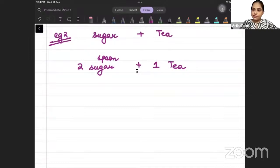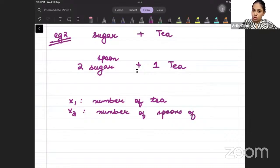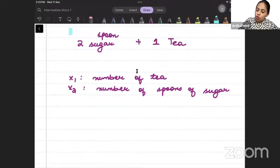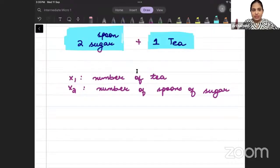Now how will we write the utility function? Let us say that x1 represents the number of tea. And x2 represents the number of spoons of sugar. Now we have to see that I am using 2 spoons of sugar with 1 tea. We are using 2 spoons of sugar with 1 tea.